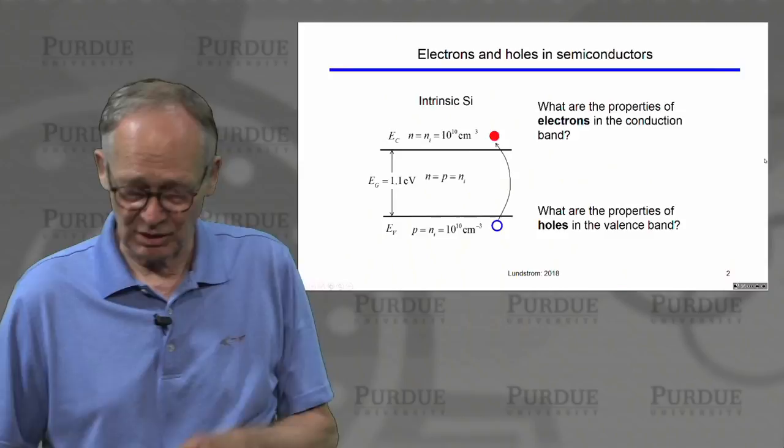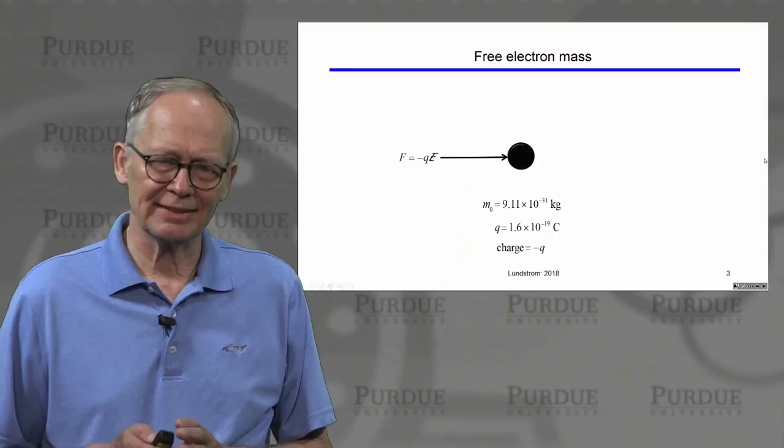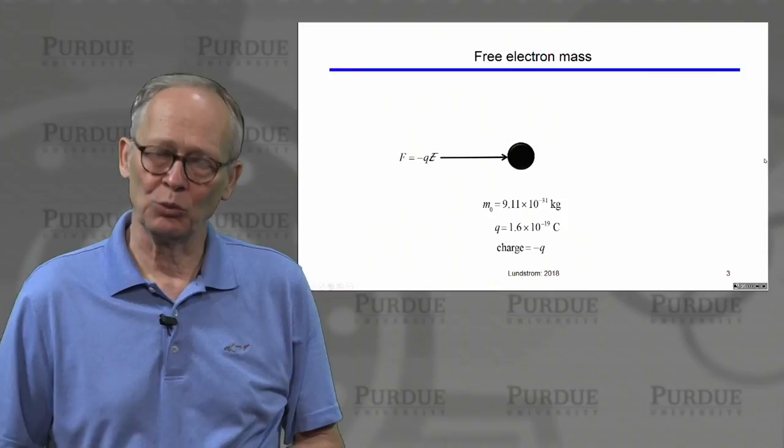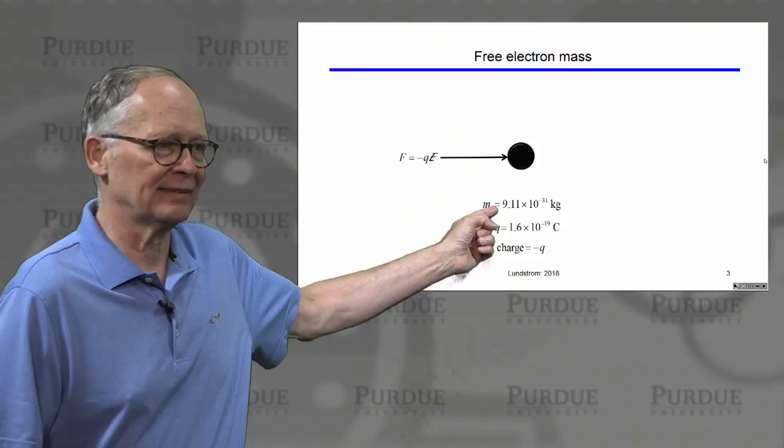Let's begin by discussing a simpler problem — a free electron in vacuum. This electron has a mass, we'll call it a rest mass M0: 9.11 times 10 to the minus 31st kilograms. We call it the rest mass because that's what the mass is as long as it's not moving at relativistic speeds.